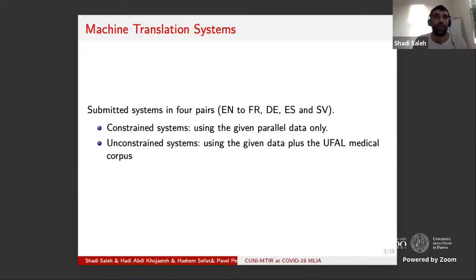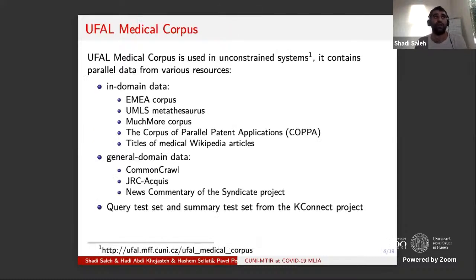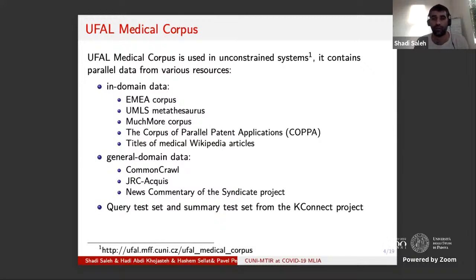For the unconstrained systems, we used the given data plus the UFAL medical corpus. The UFAL medical corpus was maintained and designed at Charles University during the HimGore and KeyConnect project. It contains in-domain medical data and general domain data. On average we have around 25 to 50 million sentences per language pair, between English and Czech, German, French, Spanish, Swedish, Polish, and Hungarian.